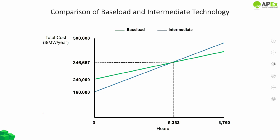The baseload technology — shown with a green line — has a Y-intercept of $240,000 per megawatt per year, representing the annual capital cost of installing one megawatt. The slope of its total cost line reflects the operating cost of $20 per megawatt-hour. The intermediate technology has a Y-intercept of $160,000 per megawatt per year with an operating cost slope of $35 per megawatt-hour. The two lines cross at approximately 5,333 hours per year, which corresponds to a capacity factor of around 61%.